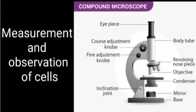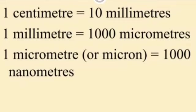Measurement and observation of cells. In 1673, Anton van Leeuwenhoek assembled various lenses to construct a microscope. He was the first to observe live bacterial and protozoan cells under the microscope. Cells are extremely minute in size and we cannot see them with the naked eye. Micrometer and nanometer are the units used for measuring their size. The compound microscope is used for observing cells. 1 cm equals 10 mm, 1 mm equals 1000 micrometers, and 1 micrometer equals 1000 nanometers.